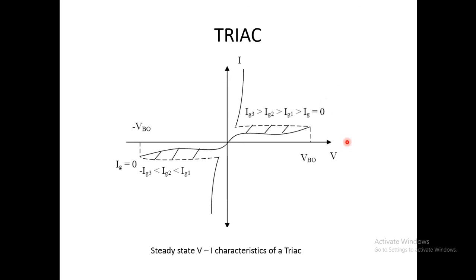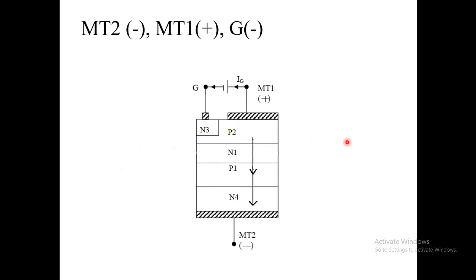Now, if we go for applying the MT2 negative, what happens? So when MT2 is negative, MT1 is positive. In that case, TRIAC is more sensitive to negative gate current. That's why we are showing this case only. In this case, when we apply MT1 positive, junction P2N1 will get forward bias. When we apply MT2 negative, junction N4P1 will get forward bias. Now, after applying gate negative, that is connected to N3...